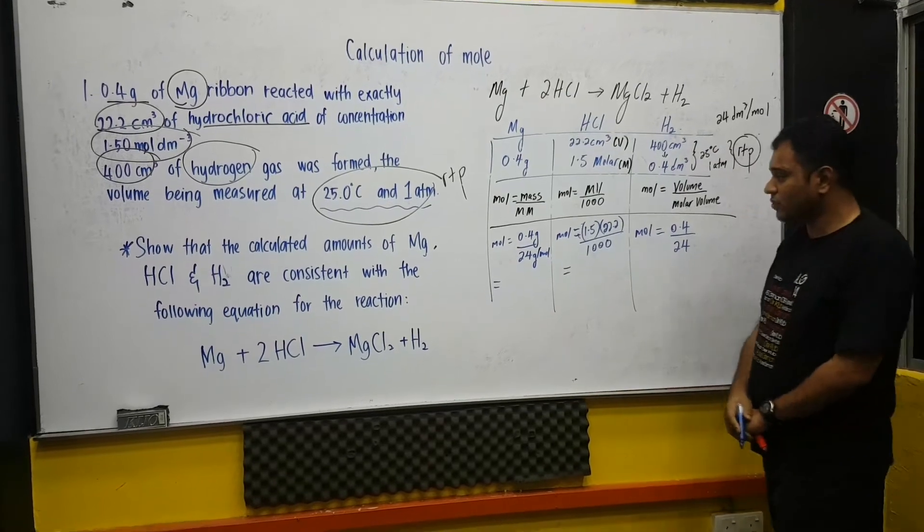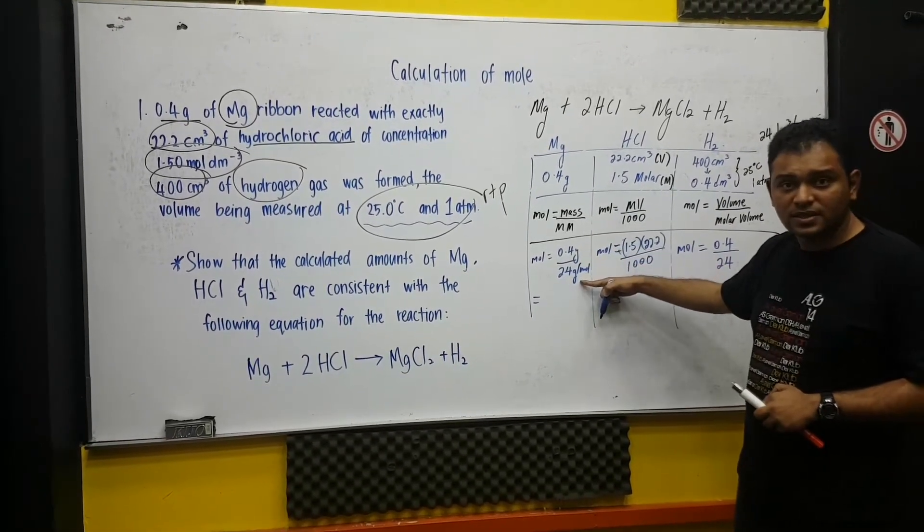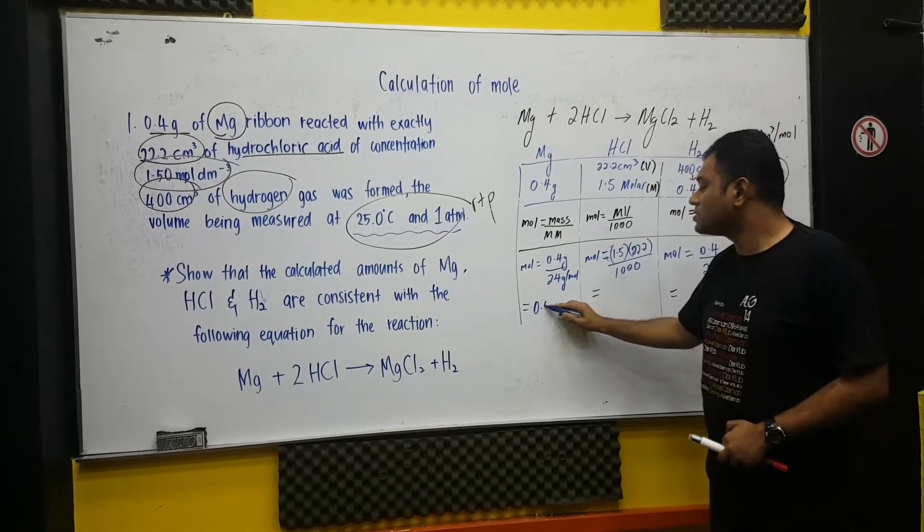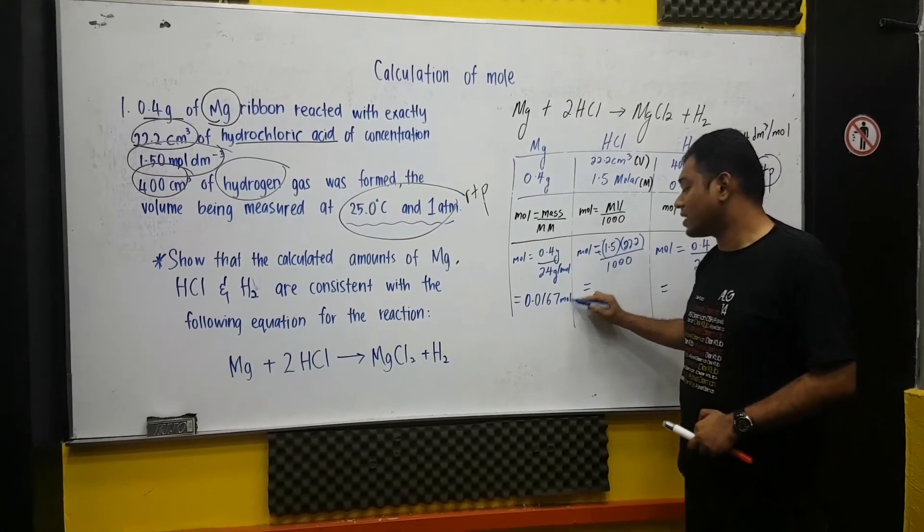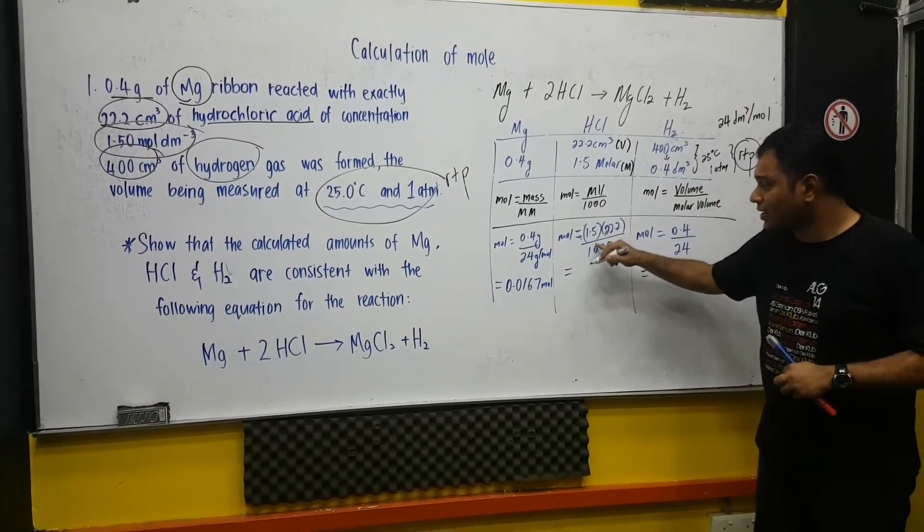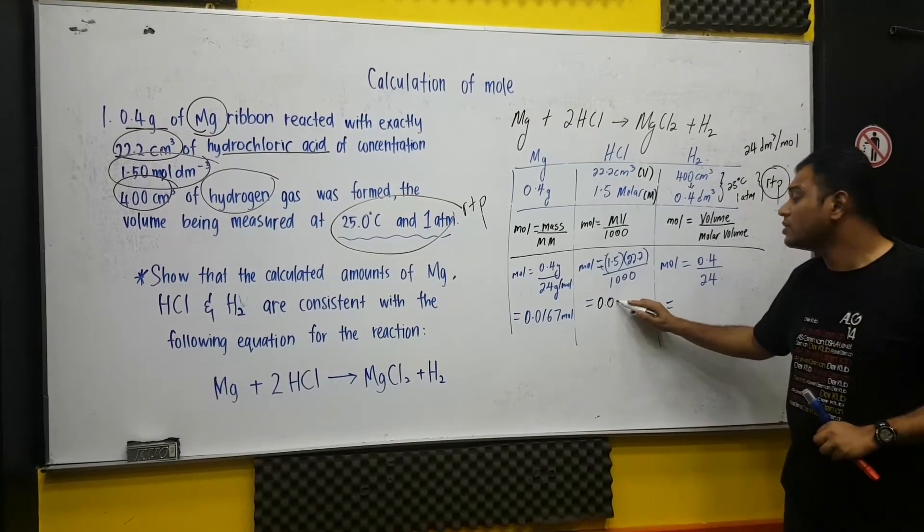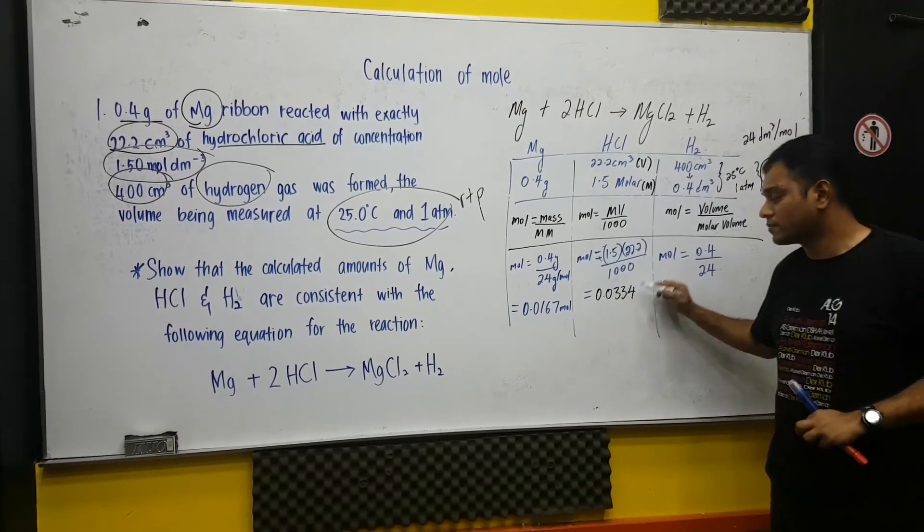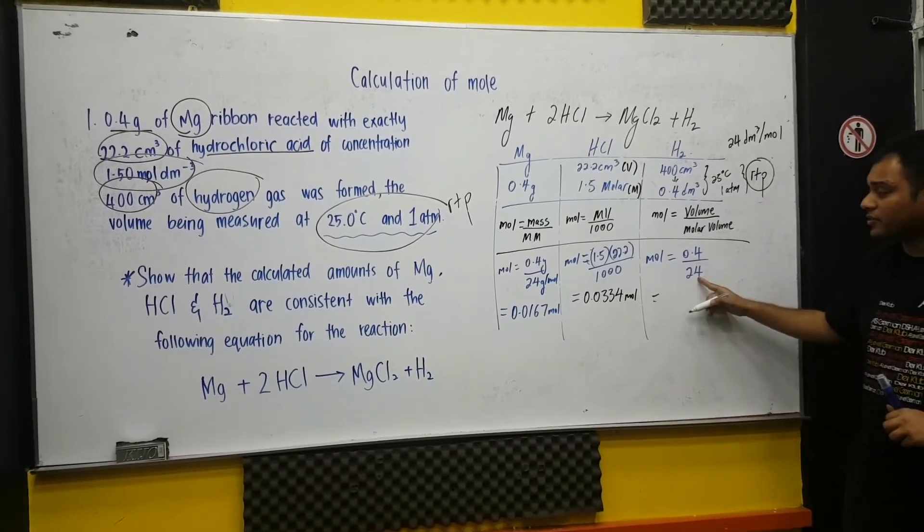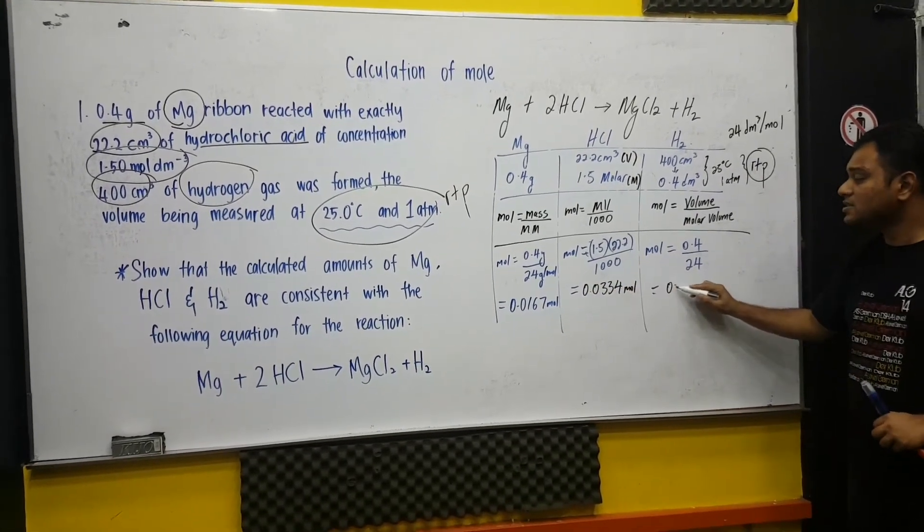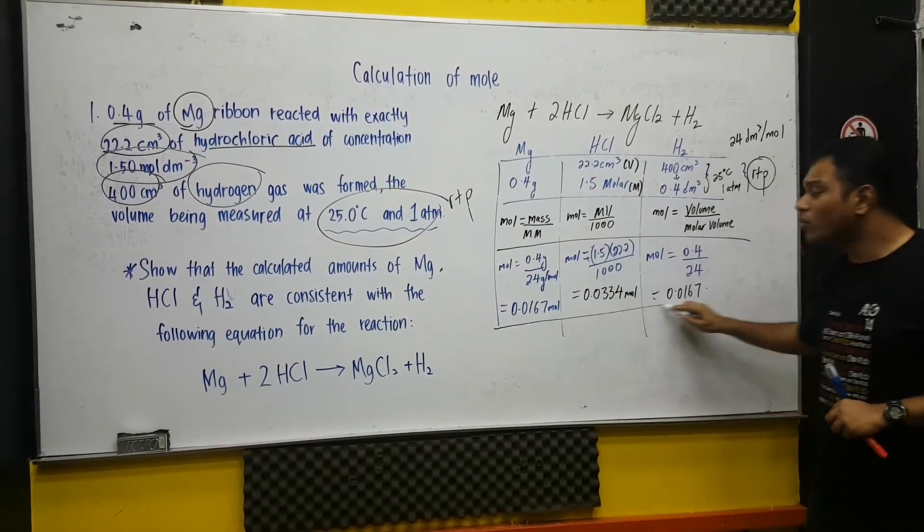So by pressing to the calculator, this divided by this. And you get 0.0167 mole. As you can see, it is mole. And this one, when you subdivide this, you get roughly 0.0334 mole. And this one, when you divide, it will give you the same answer, 0.0167. Actually, you are trying to do the mole calculation.